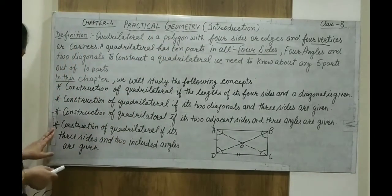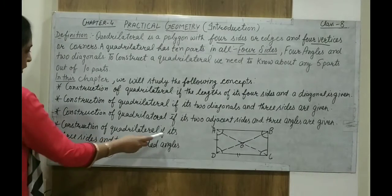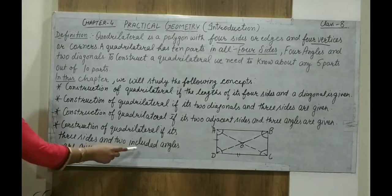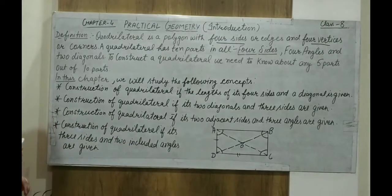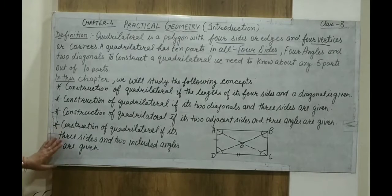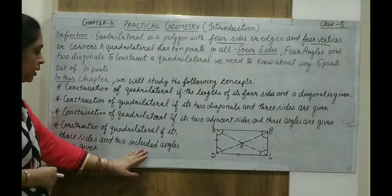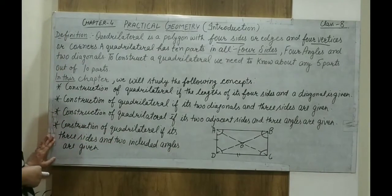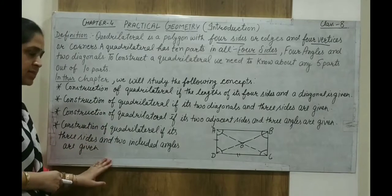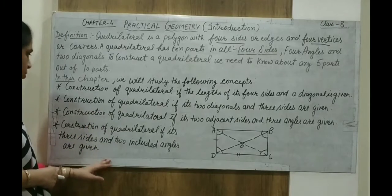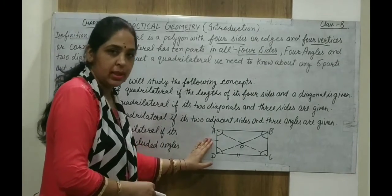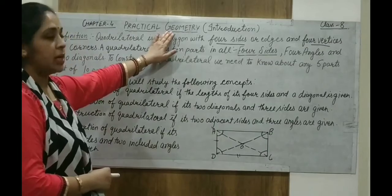The fourth condition is construction of a quadrilateral if three sides and two included angles are given. Only three sides are given and no diagonals are given, but two included angles — meaning the angles made by these sides — are given. Then we can construct a quadrilateral. By using these four conditions, we can construct a quadrilateral using the geometrical instruments.